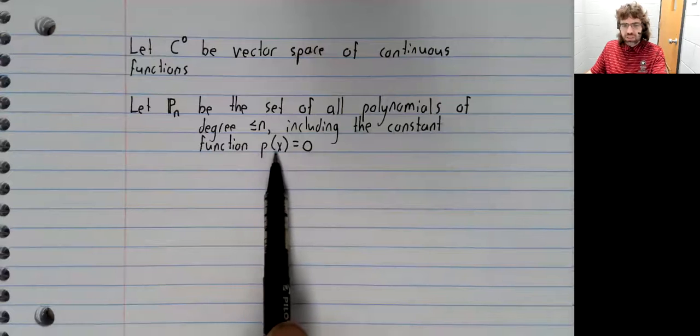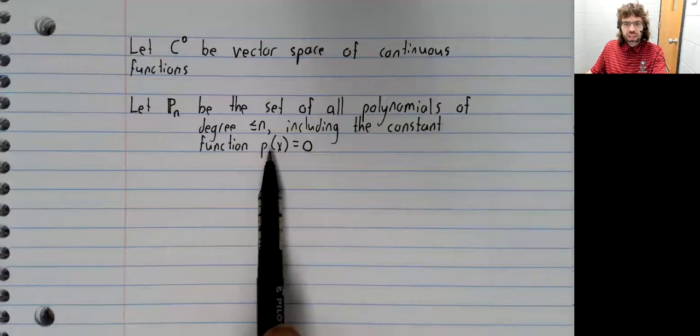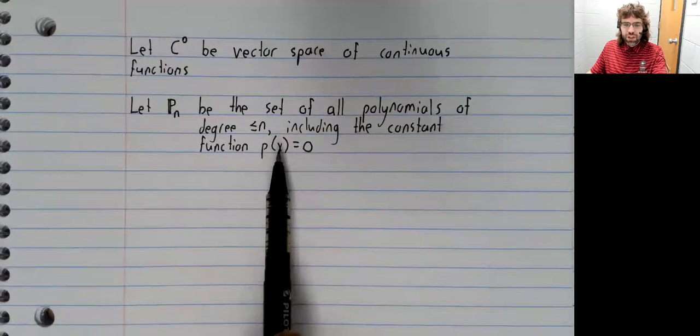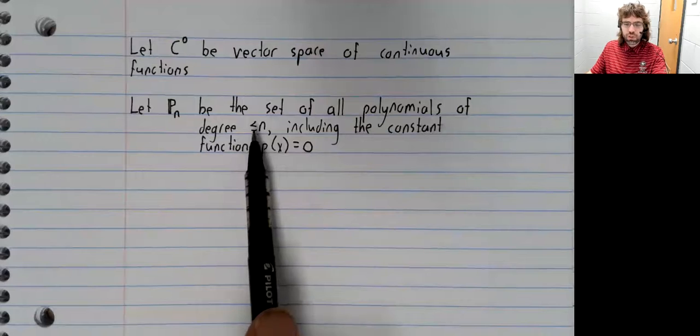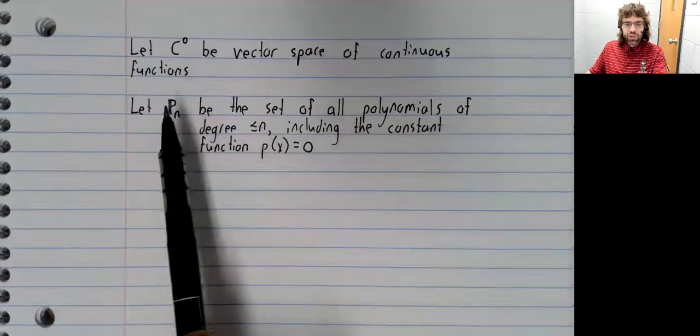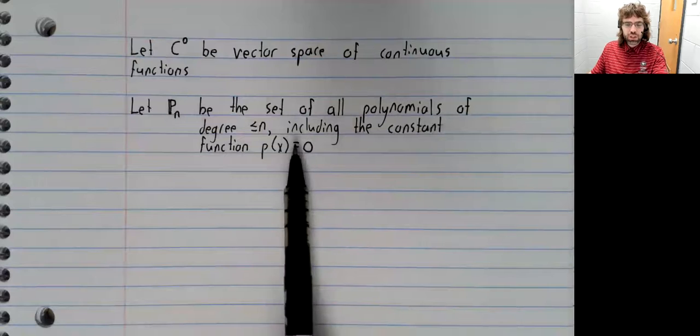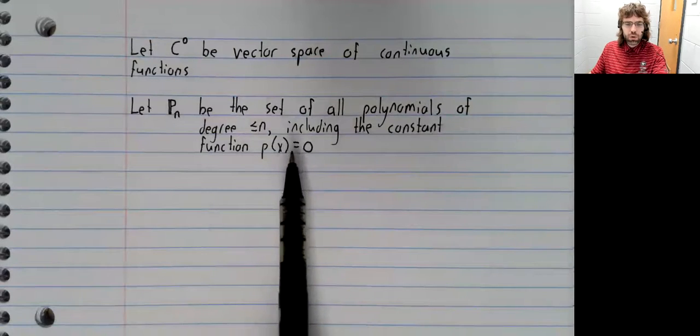including the constant function p of x equals zero. This is a polynomial. Some textbooks would say that this polynomial doesn't have a degree. If it doesn't have a degree, its degree can't be less than or equal to n. So we're not worrying about that. We are explicitly defining this set to include this polynomial, whether you think it has a degree or not.